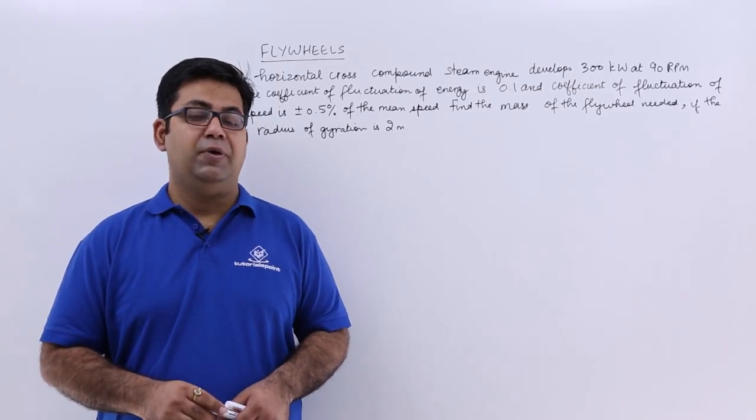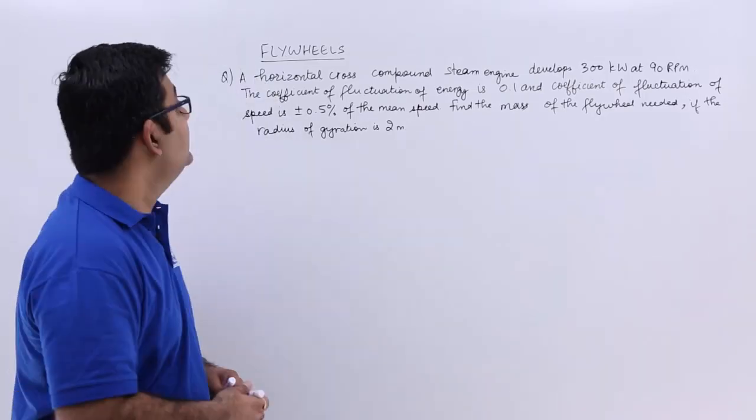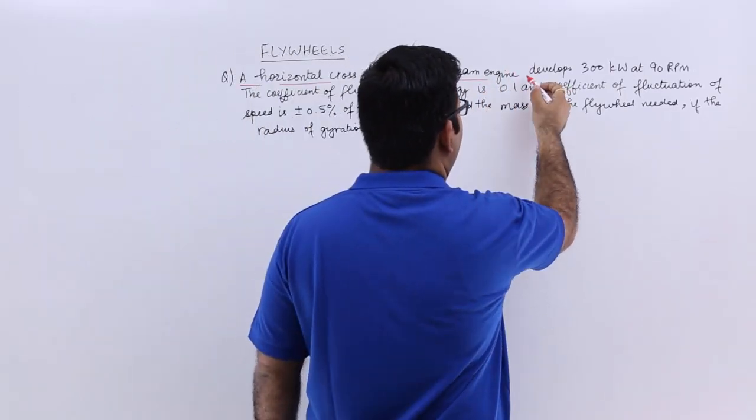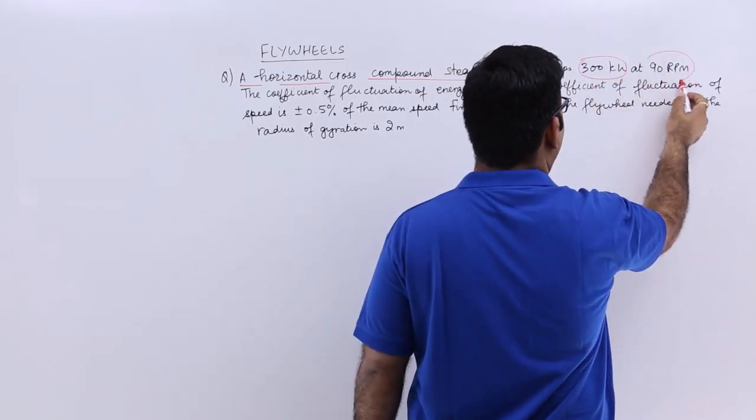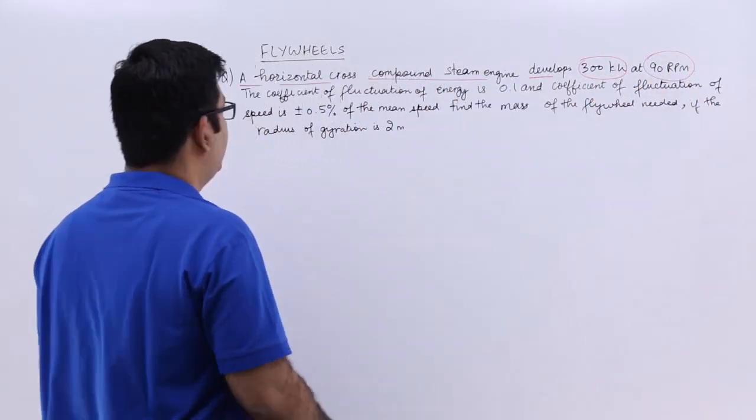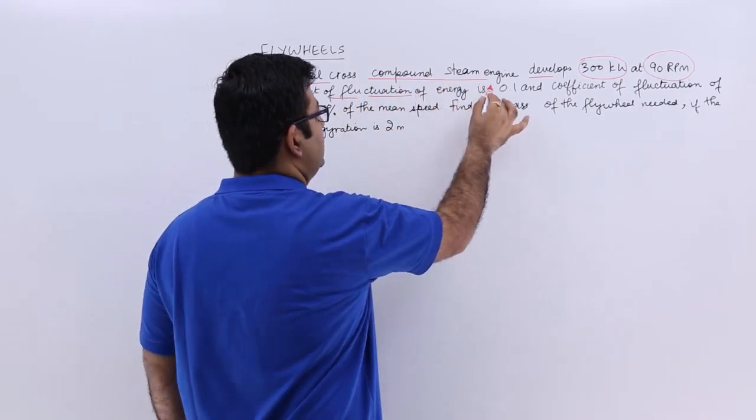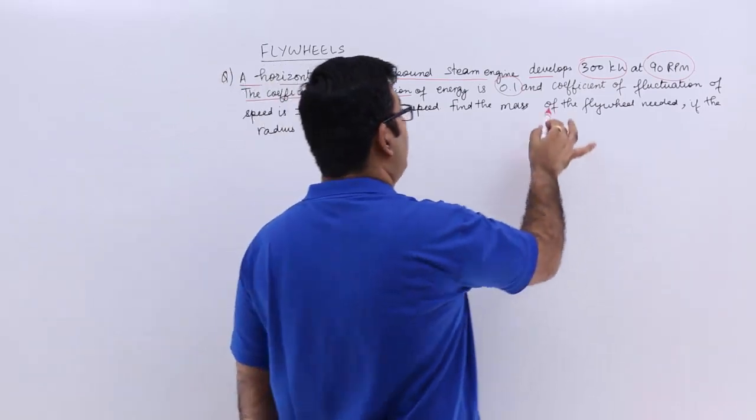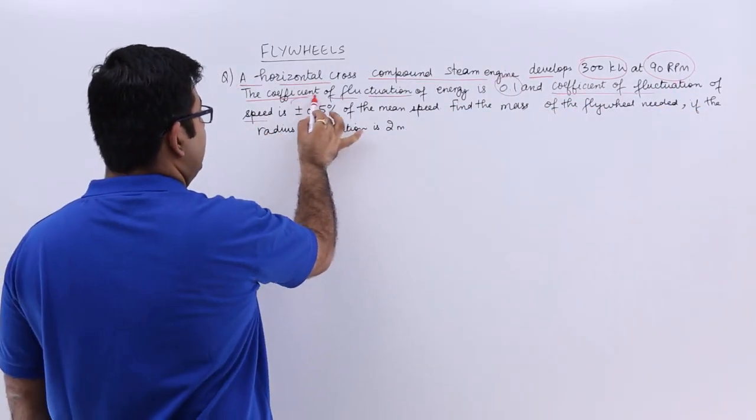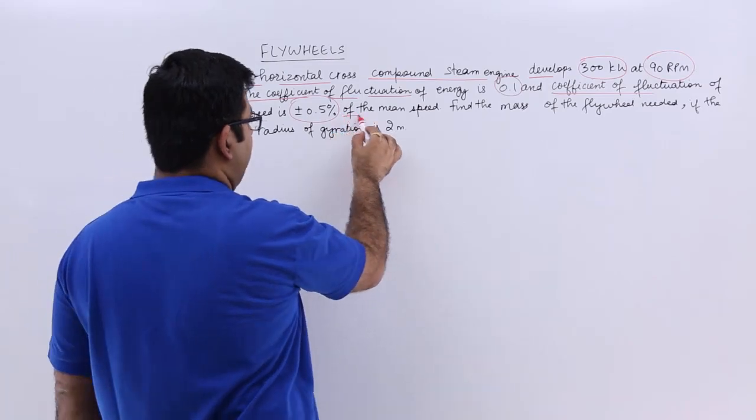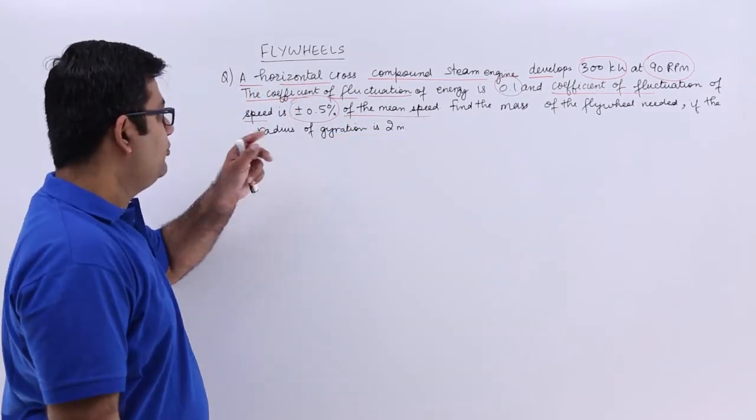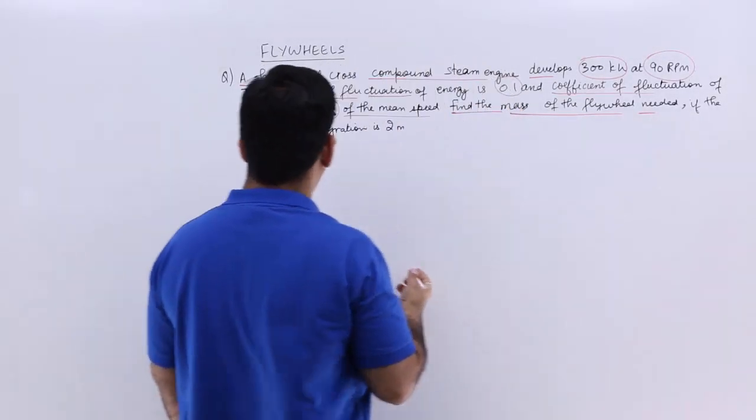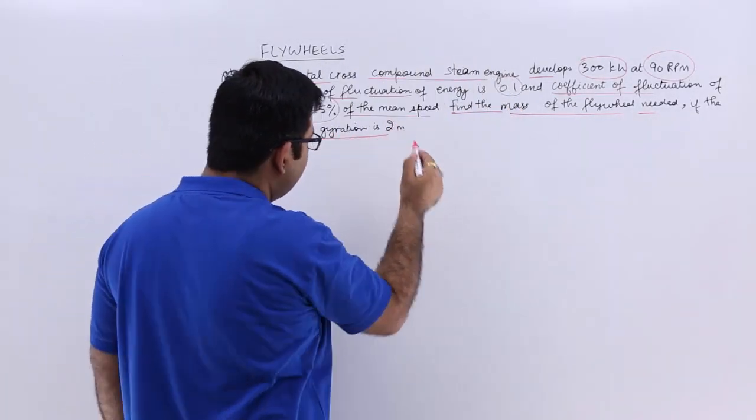Now let's look at question number 2 on flywheels. The question says a horizontal cross compound steam engine develops 300 kilowatts at 90 rpm. The coefficient of fluctuation of energy is 0.1, found from the torque-theta diagram, and the coefficient of fluctuation of speed is plus minus 0.5% of the mean speed. Find the mass of the flywheel needed if the radius of gyration is 2 meters.